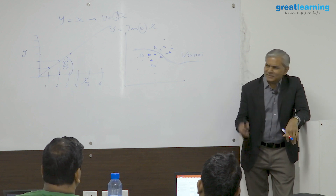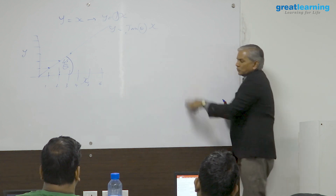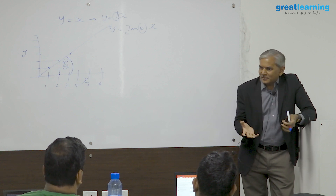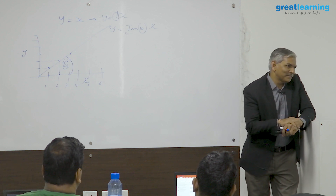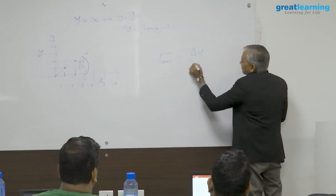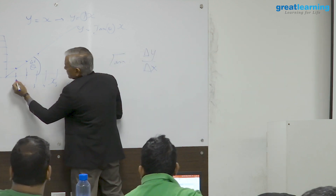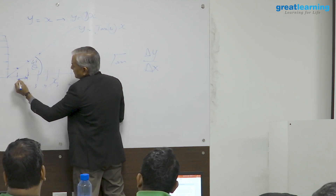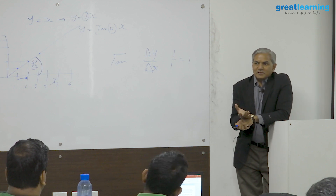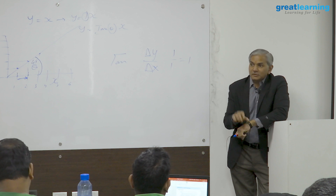You might wonder what trigonometry — tan theta and all these — are. Actually it is all common sense. In trigonometry we came across sin theta, cos theta, tan theta. These are names given to certain ratios. Tan theta is the ratio we show as dy/dx — how much y changes whenever x changes by 1 unit. That ratio is called tan. So in this graph, when x changes by 1 unit, dy/dx is 1/1 = 1. That ratio is called tan theta — sounds very hi-fi, but that is what it is.